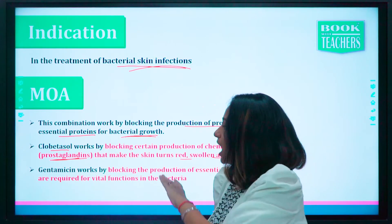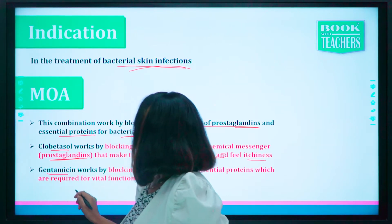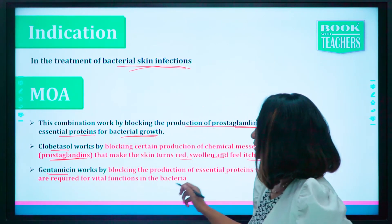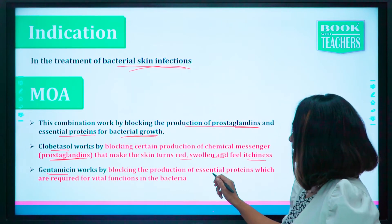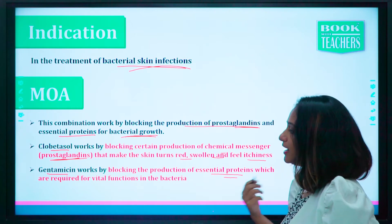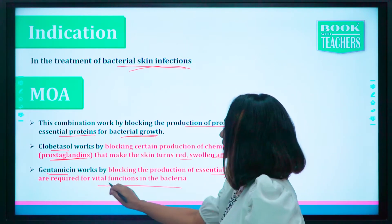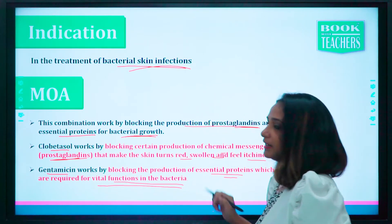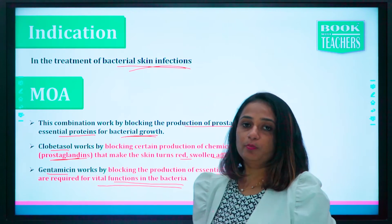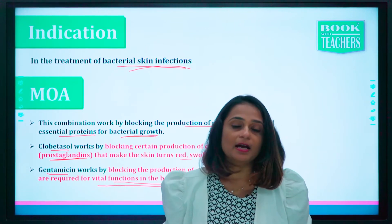Now we'll see how gentamicin works. Gentamicin works by blocking the production of essential proteins which are required for vital functions in the bacteria. Bacteria also need protein to live and to survive.